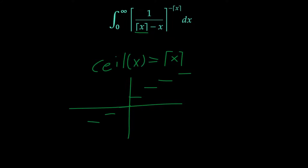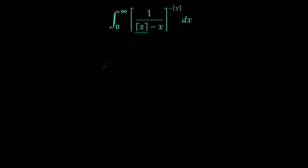So the whole point is that each of these is effectively constant on its given one-unit interval. So one way we can actually evaluate this integral, or at least begin to, is to split this integral up into little pieces — letting the ceiling of x be constant on each interval, so we can say it's just going to be some k.